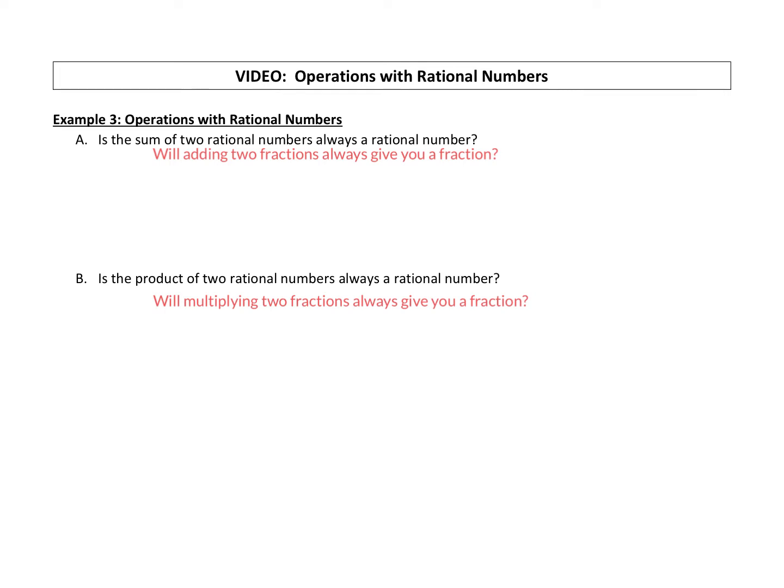So we're going to just use some variables to represent. So if I were to take a fraction, I'm going to say A over B, there's my fraction. A is a non-zero integer, B is a non-zero integer. If I take that and I add to it another fraction, let's say C over D. So all these variables are just representing integers that are not zero.